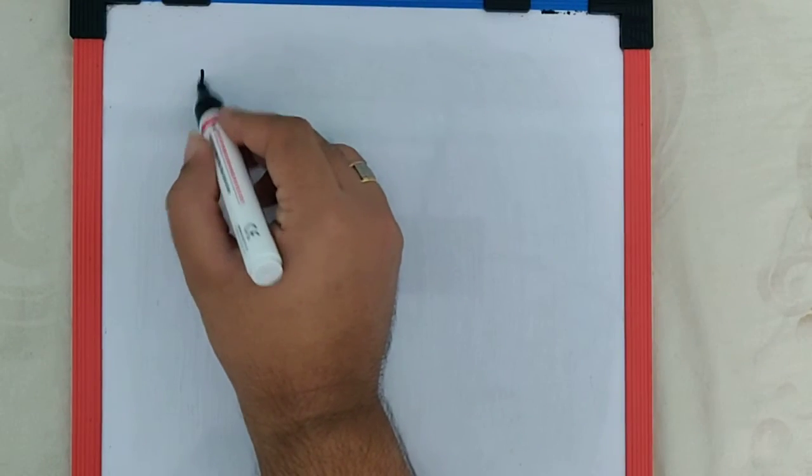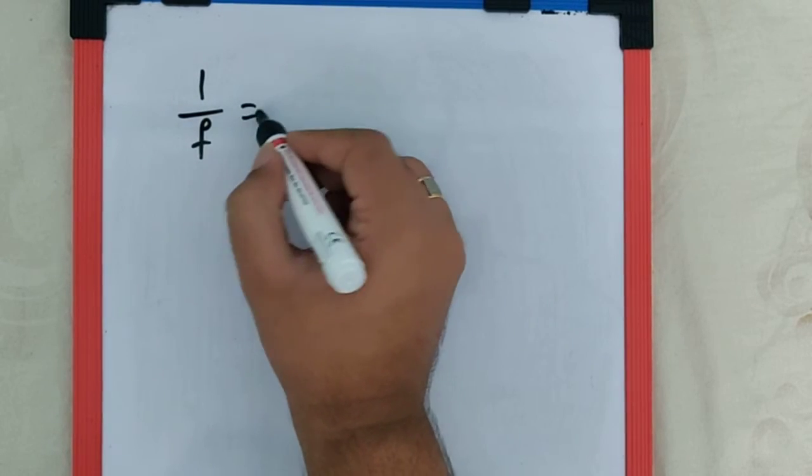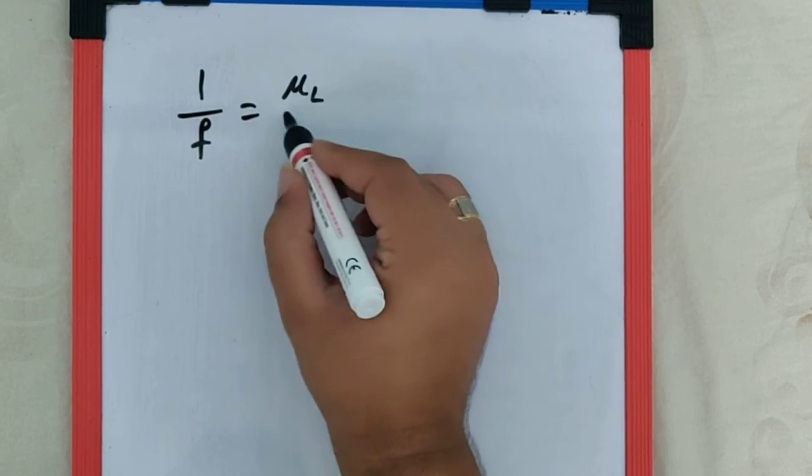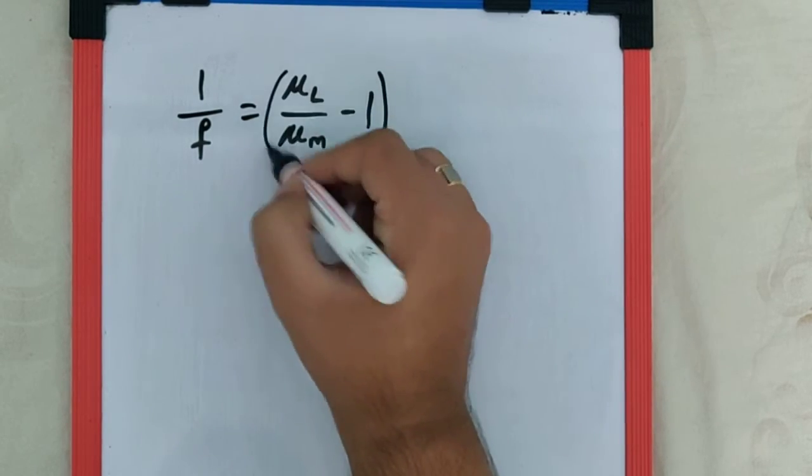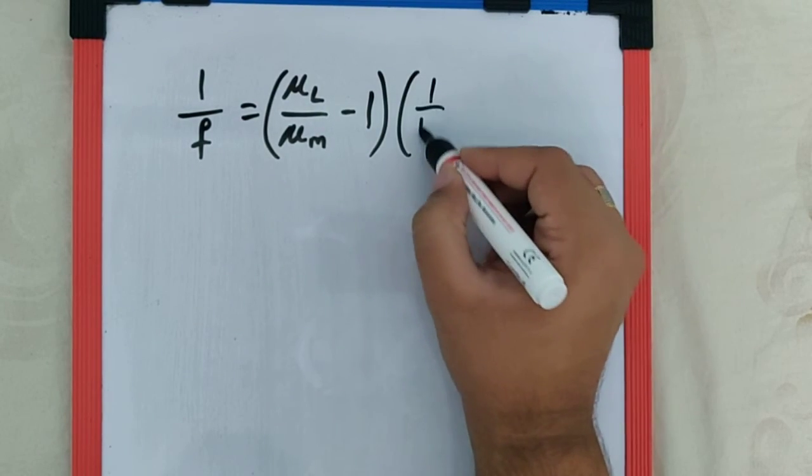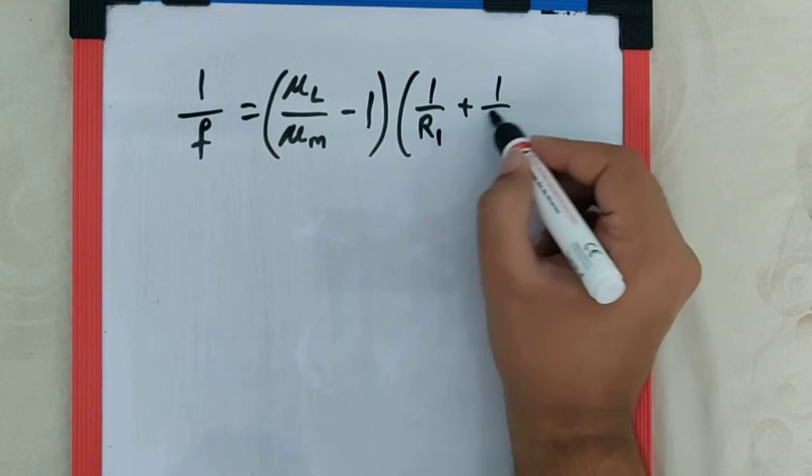To find the focal length and nature of the lens, we use the lens formula: 1/f = (mu_lens/mu_medium - 1)(1/r1 + 1/r2).